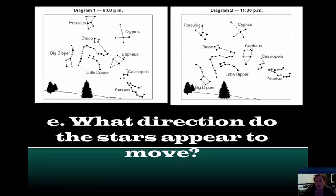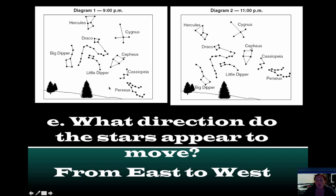What direction do the stars appear to move? Notice from here to here, which way do they appear to be moving? They are moving from east to west. This would be the east side of the picture, and this side is the west. They are moving from east towards the west. Notice the sun also rises in the east and sets in the west. Earth rotates counterclockwise from west to east. So everything is going to appear to rise in the east and set in the west.